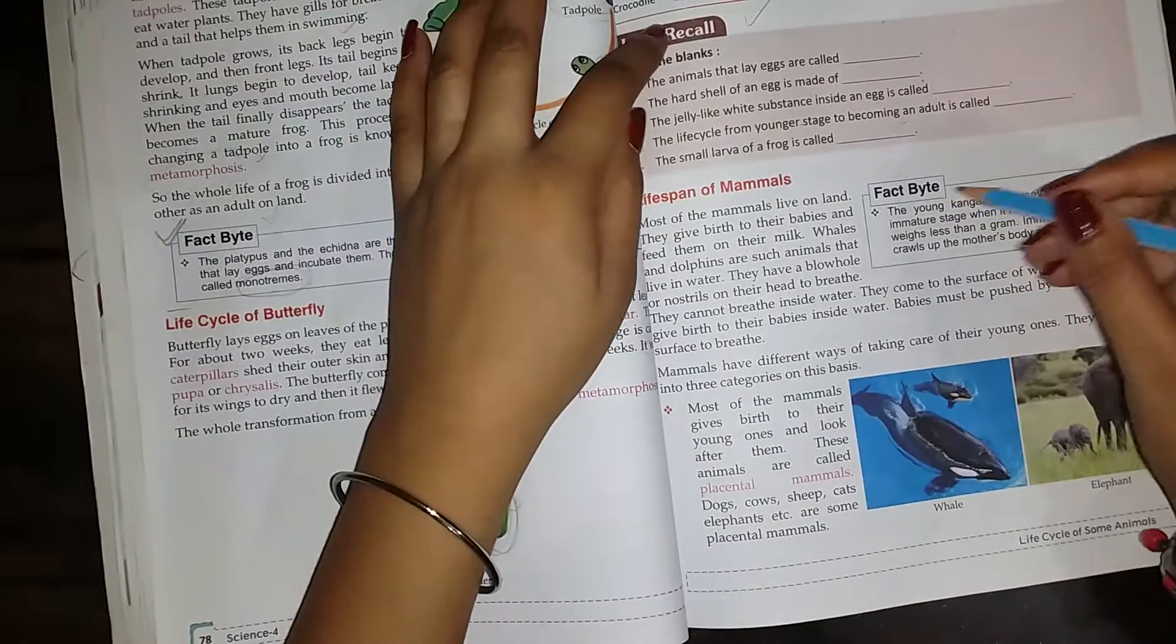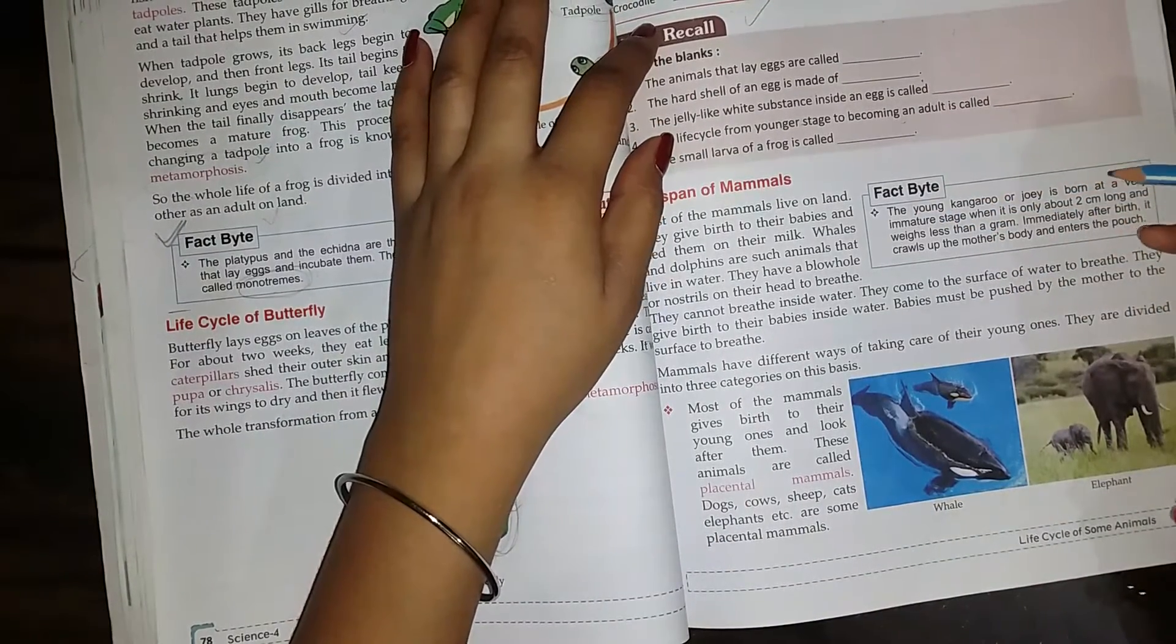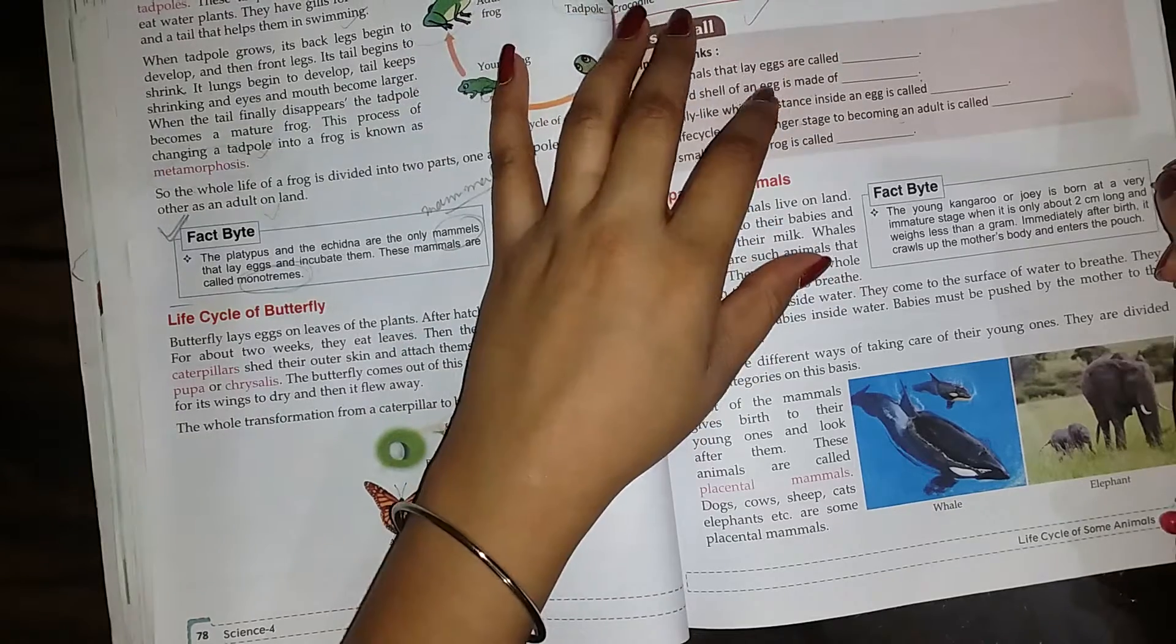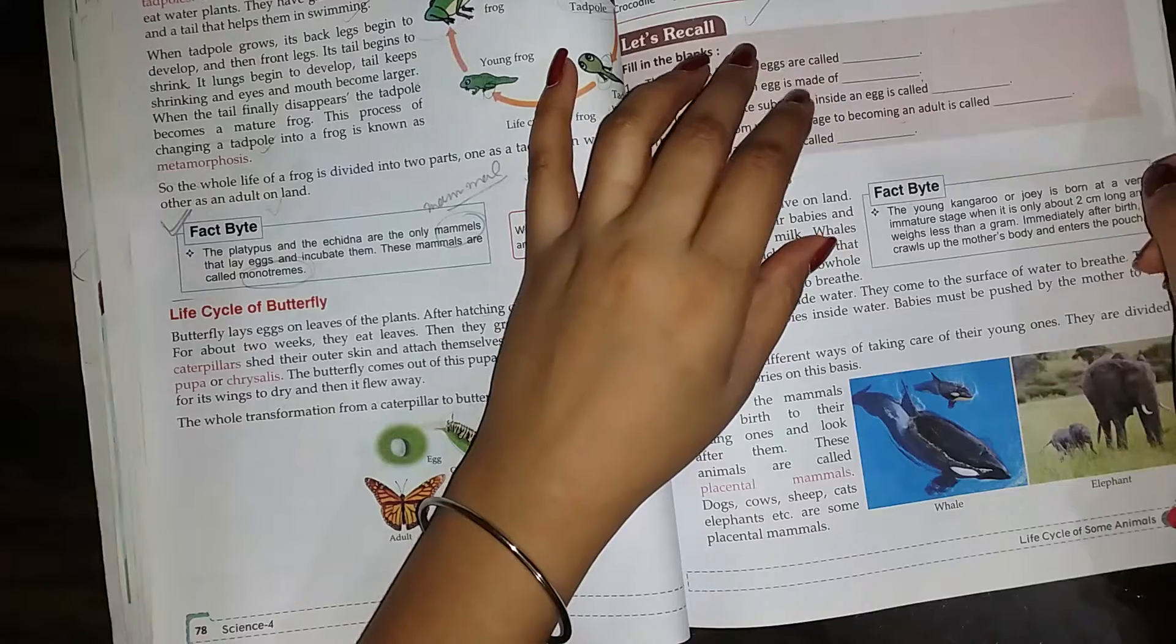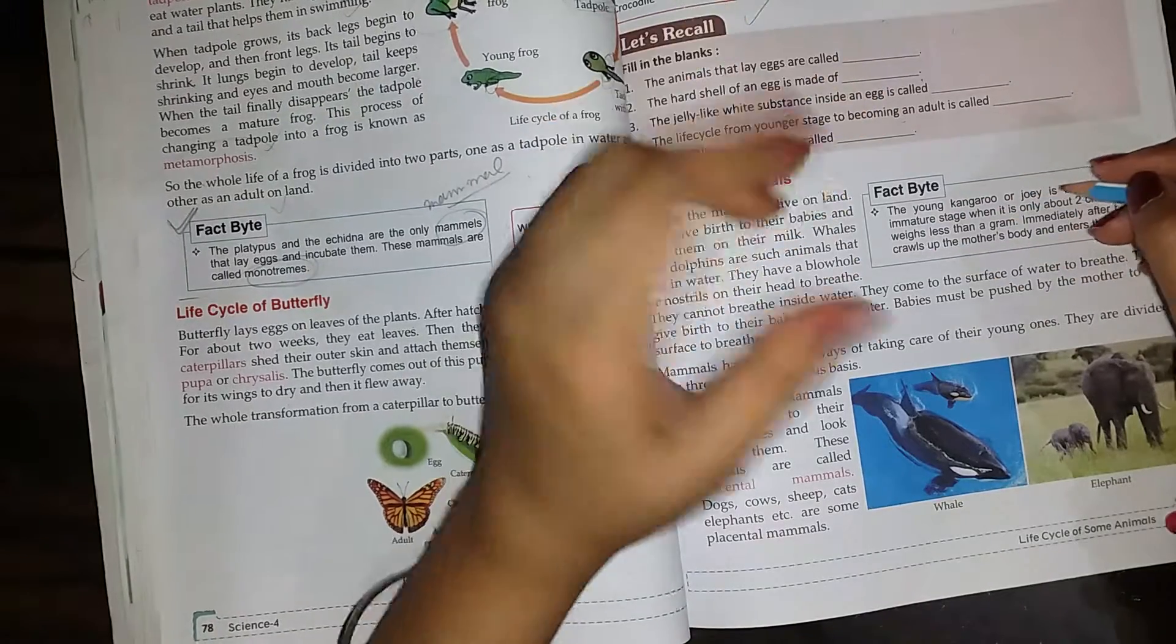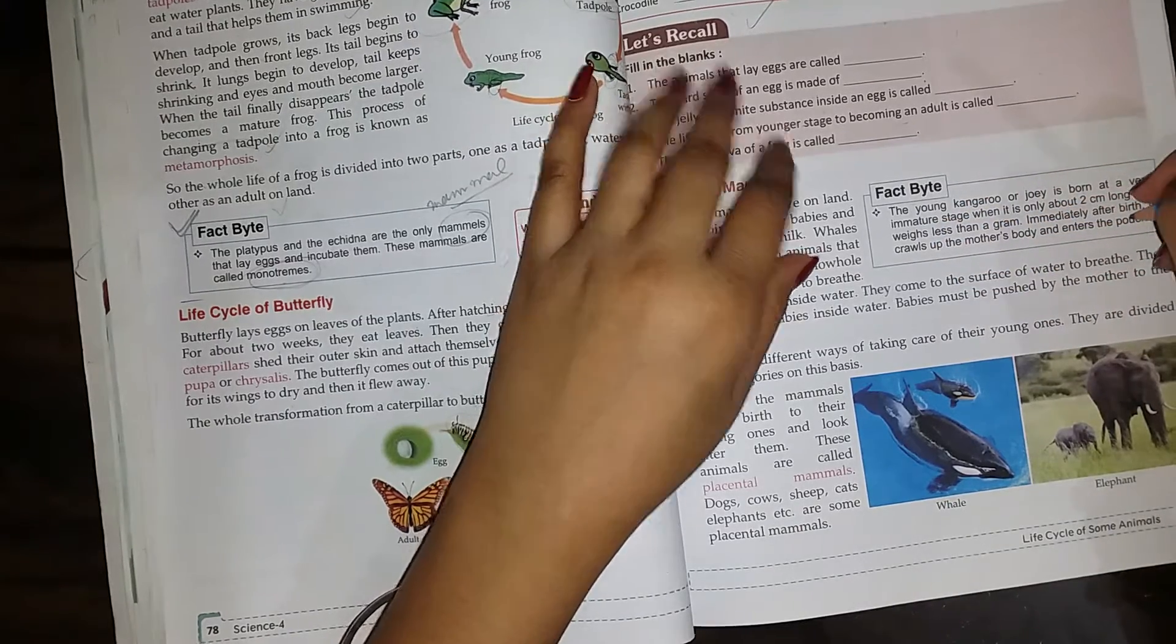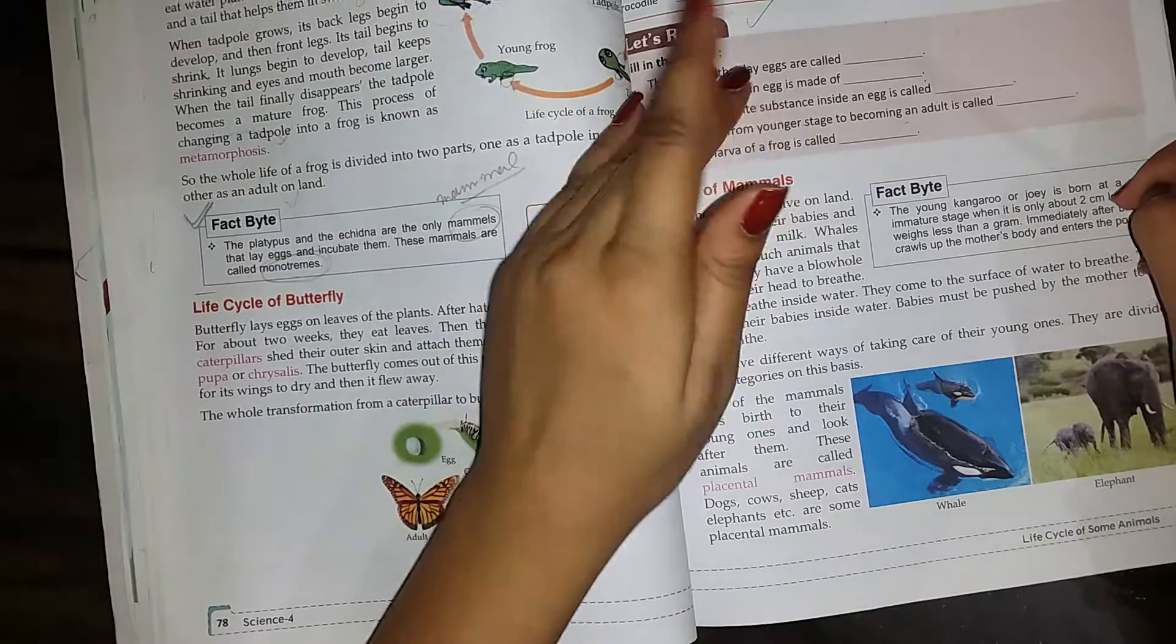Here is a fact: The young kangaroo or joey is born at a very immature stage when it is only about 2 cm long. Immediately after birth, it crawls up to the mother's body and enters the pouch. This is why it stays in the pouch.